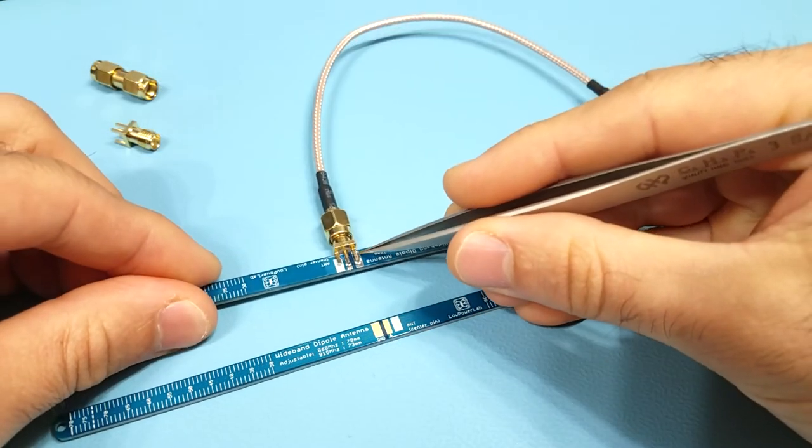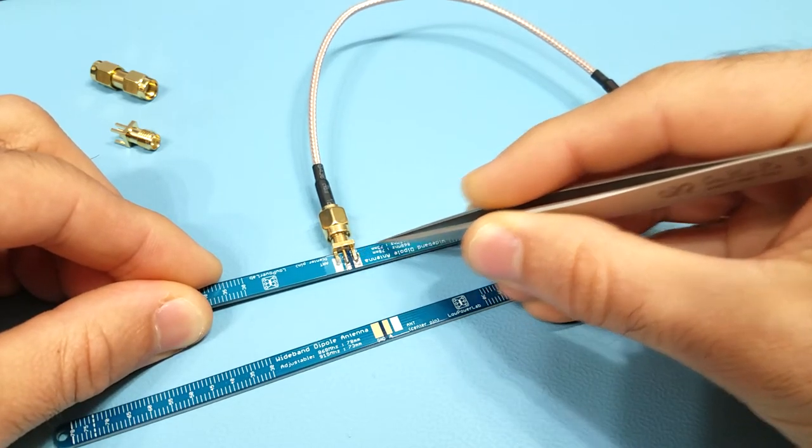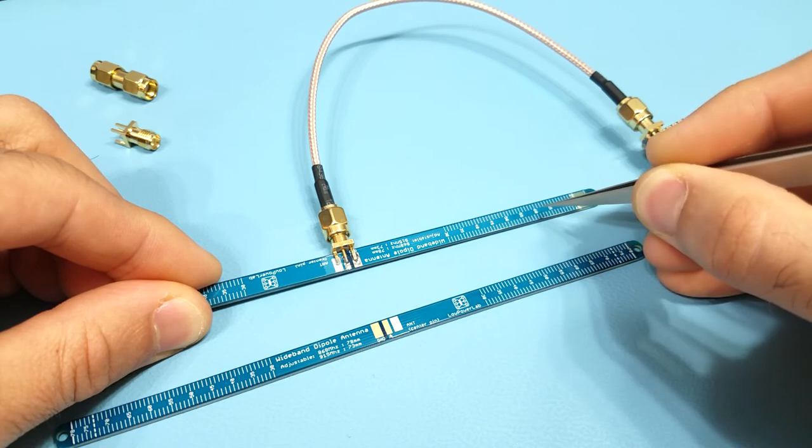Notice that only one side of the body or the ground of the SMA connector is soldered to the antenna. This is actually the ground part of the antenna.